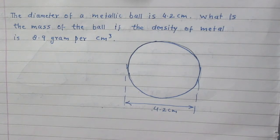We are given a spherical metallic ball and its diameter is 4.2 cm. We are to find the mass of the ball and we are given the density of the metal.